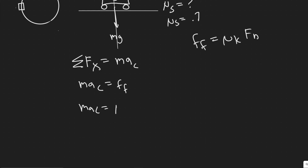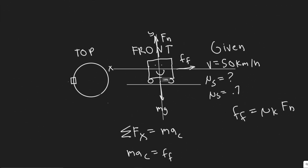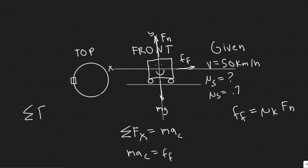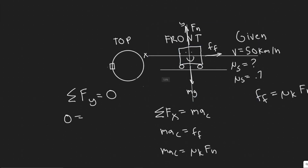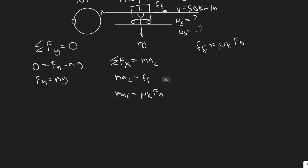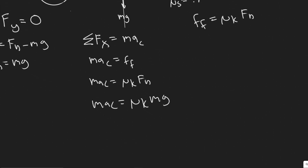The key is that the force of friction equals ma_c. The force of friction equals μ_s times the normal force, so ma_c = μ_s × F_n. To find the normal force, we sum forces in the y-direction. Since we're not moving vertically, acceleration is zero, so the forces cancel: F_n minus mg equals zero, giving F_n = mg. Substituting back, we get ma_c = μ_s × mg, and notice the masses cancel.